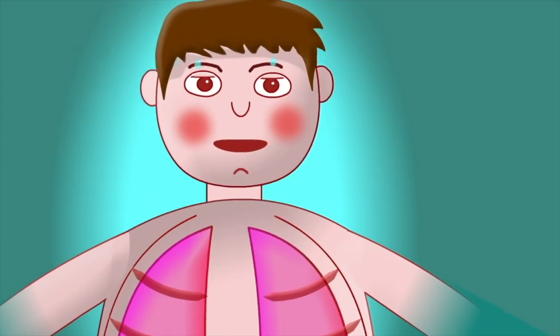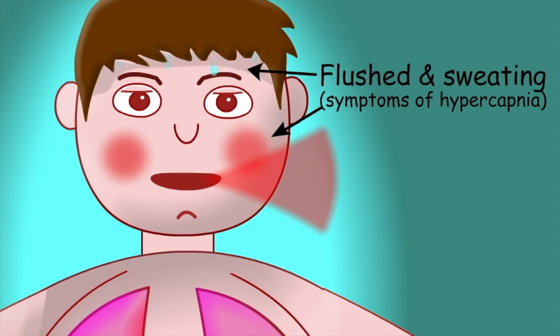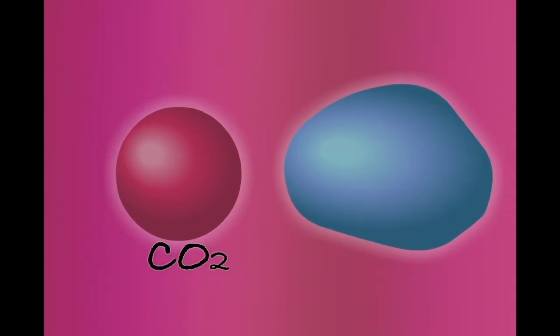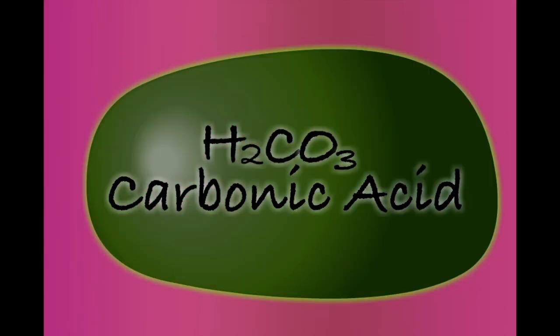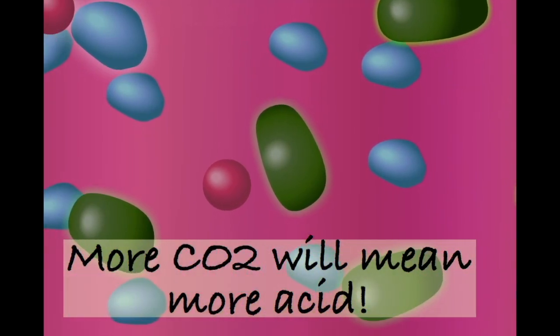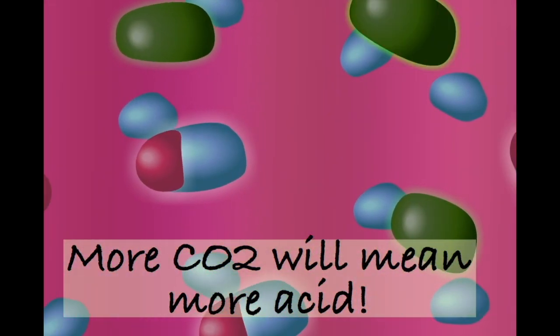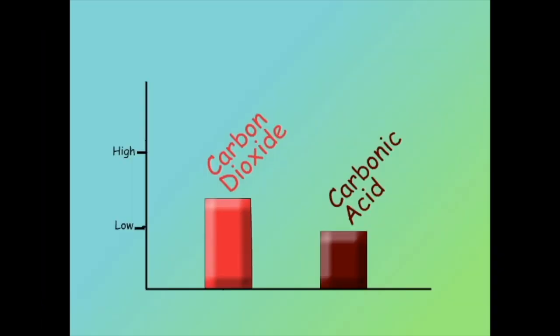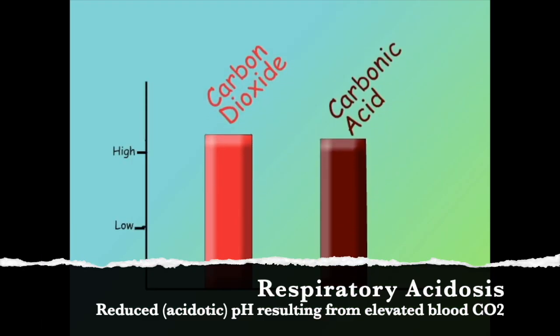A significant consequence of hypercapnia can be a reduction in blood pH. When CO2 combines with water in the blood it forms carbonic acid. An increase in blood CO2 will inevitably also mean an increase in carbonic acid, potentially pushing the body into a respiratory acidosis.